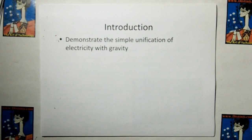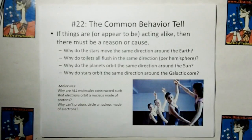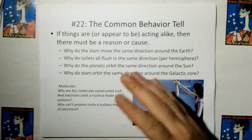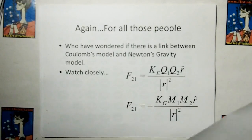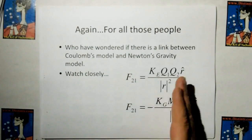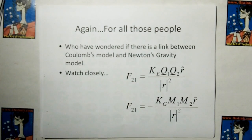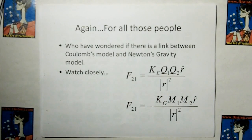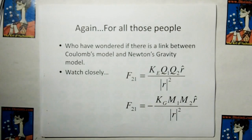I'm going to demonstrate a simple unification of electricity with gravity, and we start off by using the rule of acquisition number 22: the common behavior tell. If things are or appear to be acting alike, then there must be a reason or cause. I'm using this for all those people who have wondered if there is a link between Coulomb's model and Newton's gravity — look closely, these models look alike. They're almost identical in form, and if they look almost identical in form there must be an underlying root cause why they look alike and act alike.